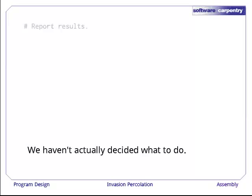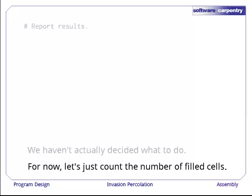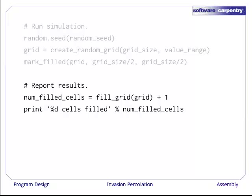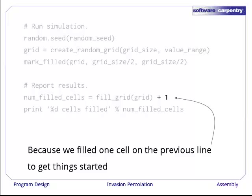The last task we have is to report results. But we haven't actually decided what to do about this. Nothing in our specification told us whether we were supposed to draw the fractal, calculate some statistics, or do something else entirely. For now, we'll just count the number of cells that we filled in and print that. We will change fill_grid so that it returns the number of cells that have been filled in, and then we'll print that number out. Except we'll add one to the value returned by fill_grid because we marked the center cell as being filled manually. This is a little bit clumsy. Somebody who hasn't read our code carefully might think that fill_grid returns the total number of cells that are filled, not one less than that. We should go back and tidy that up later.